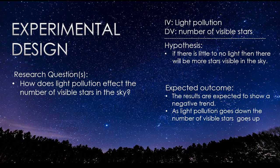The experimental design. The research question was: how does light pollution affect the number of visible stars in the sky? The independent variable is light pollution. The dependent variable is the number of visible stars. The hypothesis is that if there is little to no light, then there will be more stars visible in the sky. The expected outcome is that the results are expected to show a negative trend, and as light pollution goes down, the number of visible stars goes up.